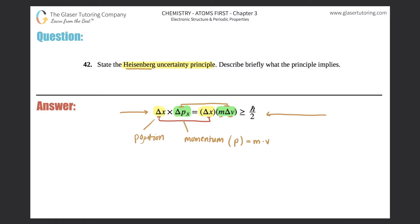It's basically stating that you can never really know for certain, or with certainty, an electron's position and its momentum at the same time. That's why it's an uncertainty principle. You got to be uncertain about something.